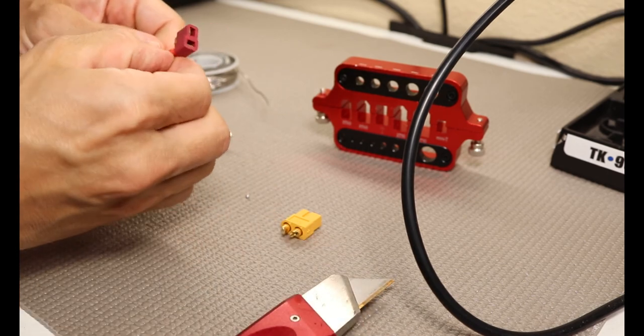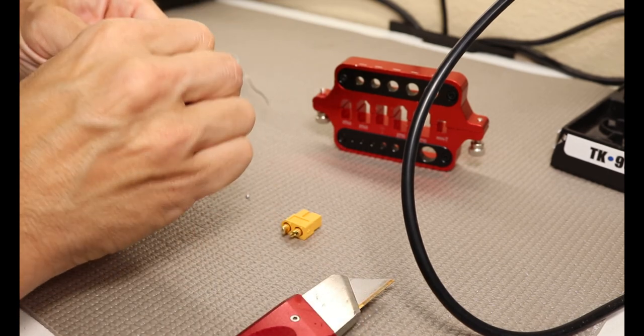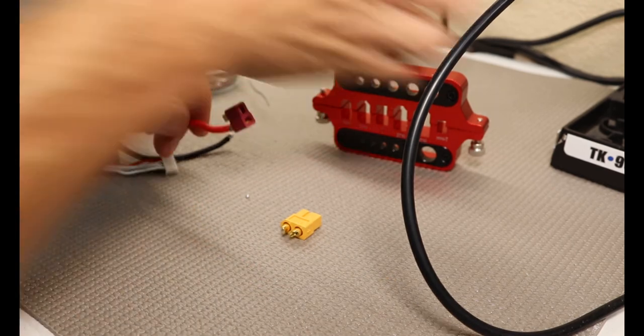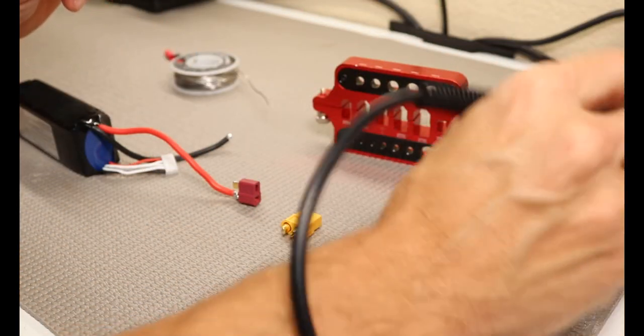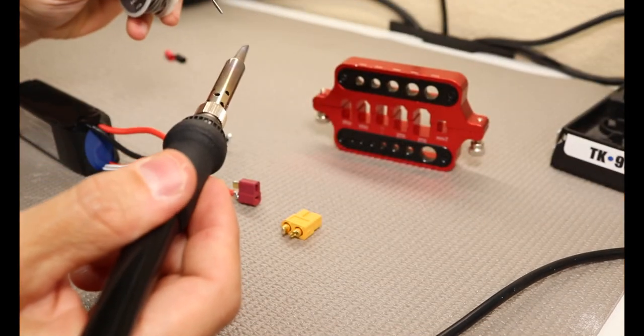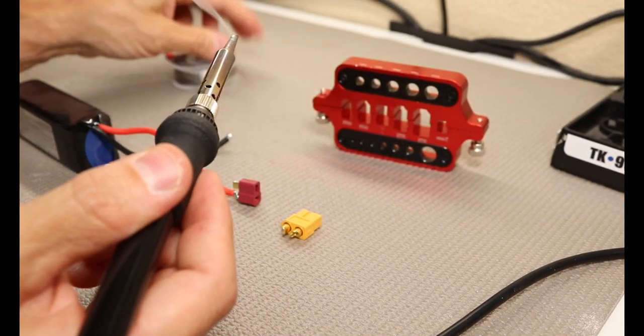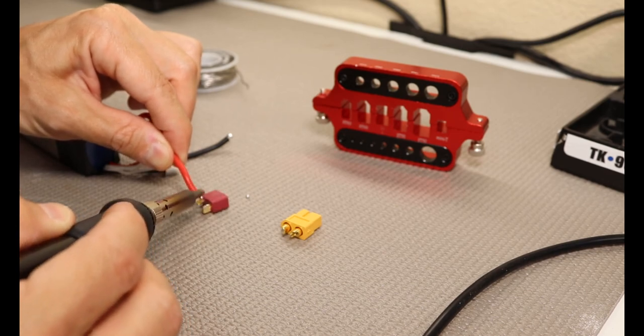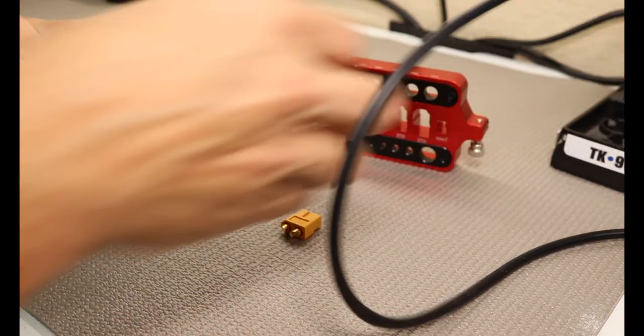So same thing here. We're just going to remove the shrink tube. Be careful with the other connector because they can stay hot from the previous solder operation. Always clean off our iron, a little bit of solder to tin it. And now we have two exposed wires.